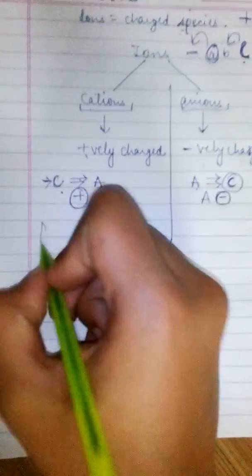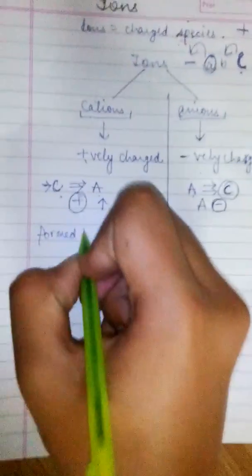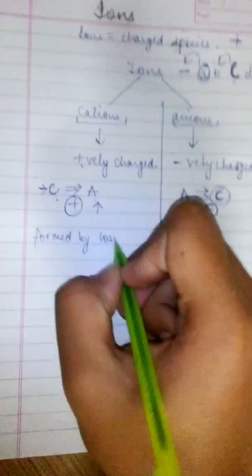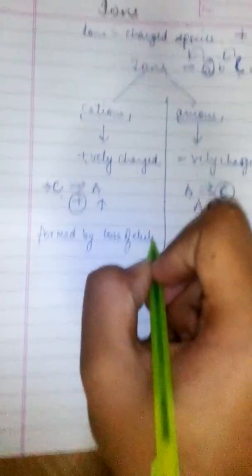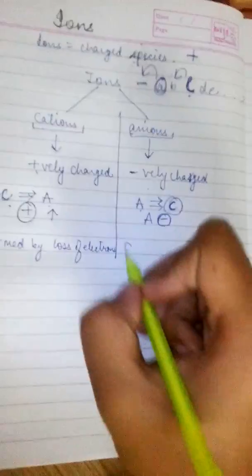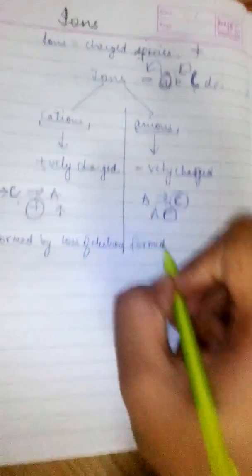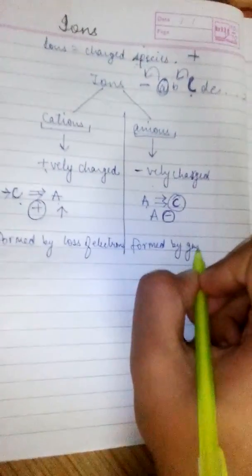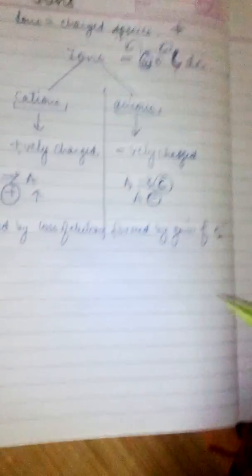Cations, they are formed by loss of electrons. And anions, they are formed by gain of electrons. So you might be thinking what E negative is. It is basically electrons. It's a symbol for them.